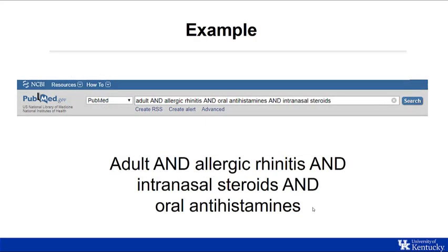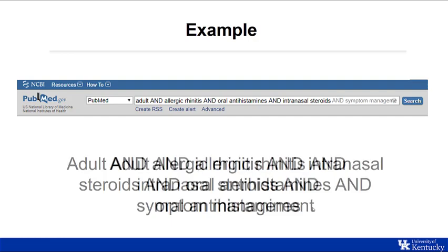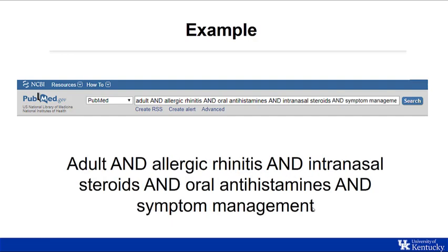Using PICO will help you develop a search strategy. For example, you can use 'adult' and 'allergic rhinitis' and 'intranasal steroids' and 'oral antihistamines.' You could also add 'symptom management.' The more specific the search strategy and the more terms you use, the more narrow your search will become.